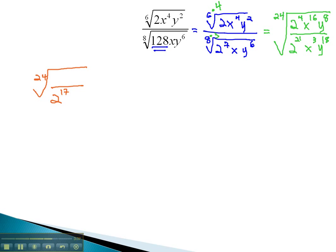Subtracting on the x's, 16 minus 3 gives us x to the 13th. Subtracting on the y's, 8 minus 18 is negative 10, meaning the y to the 10th has to go in the denominator.